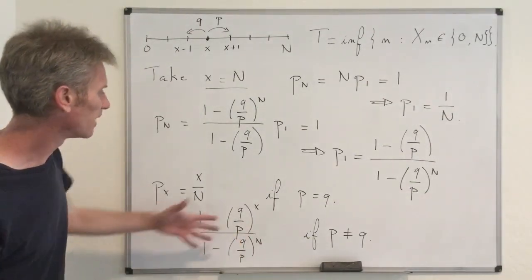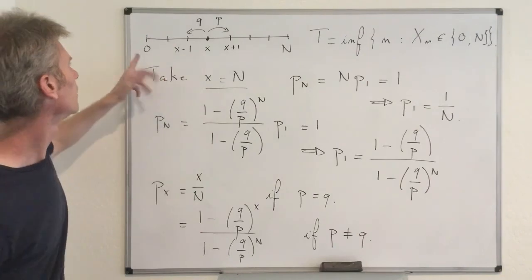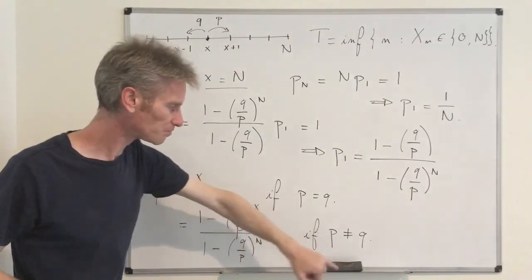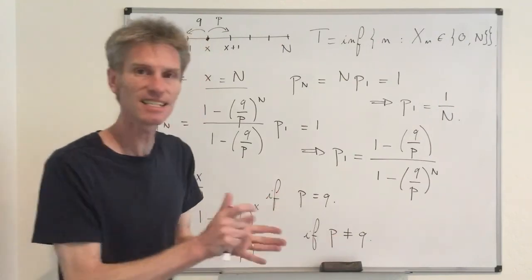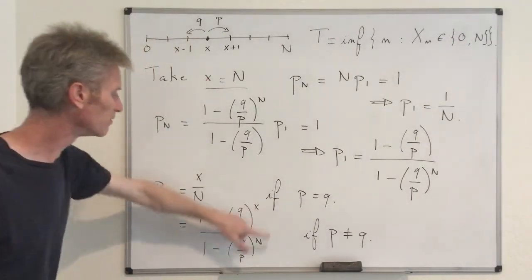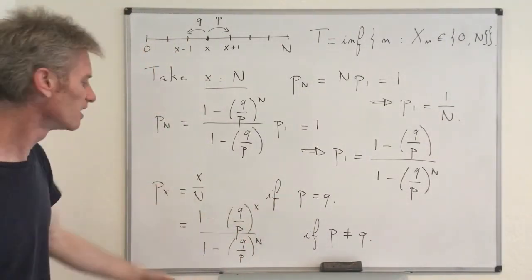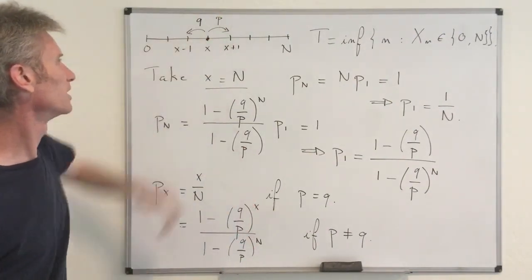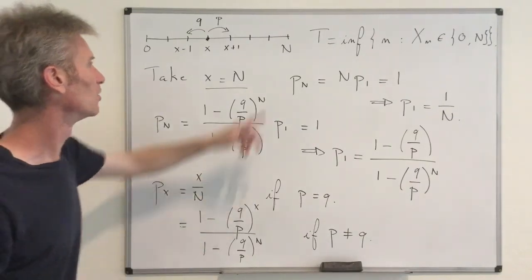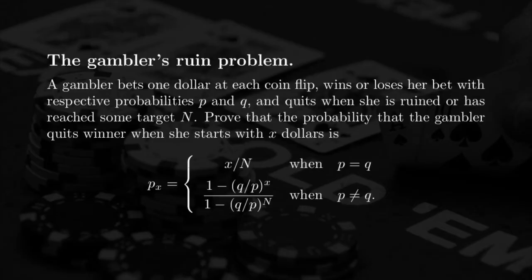It turns out that when N is large and X is well between 0 and N, even if P is slightly less than Q — meaning the game is slightly unfavorable — this quantity goes to 0 pretty quickly with N. Even if X is large, if you are away from N, it's not likely that the gambler will quit a winner. That concludes the proof using first step analysis.